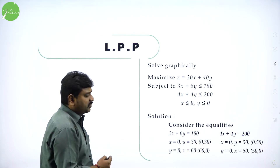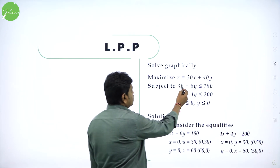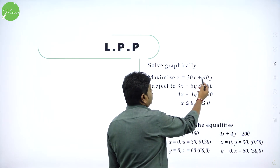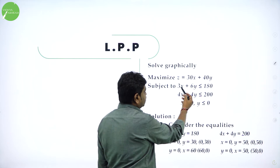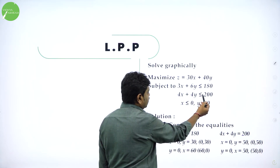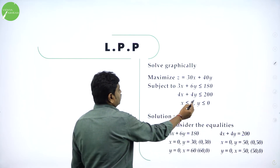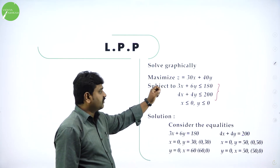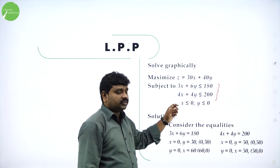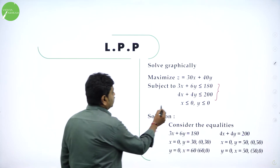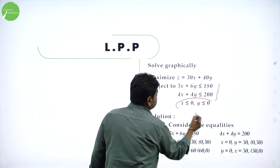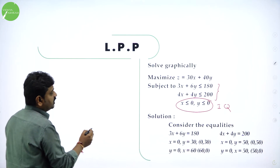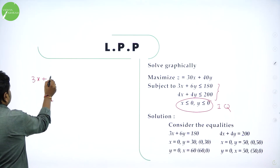Next we have another problem — a direct graph question. Maximize Z = 30X + 40Y, subject to: 3X + 6Y ≤ 180 and 4X + 4Y ≤ 200, with X, Y ≥ 0 (first quadrant). We need to solve this graphically by drawing the constraints.